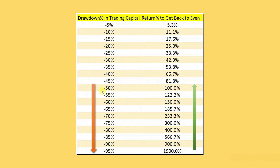As you can see from this table, the math turns really ugly from the 60% drawdown point onwards. From a 60% drawdown, you would need 150% returns just to get back to break-even.